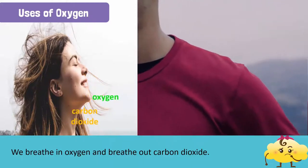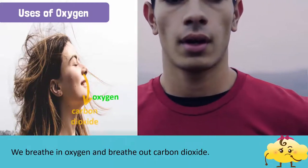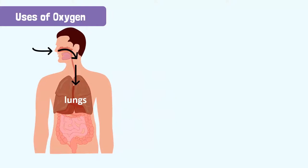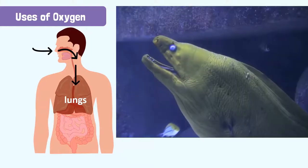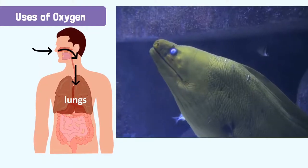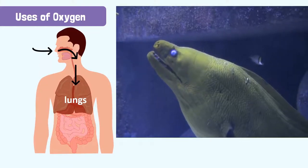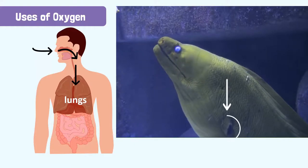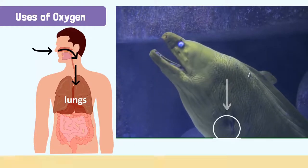We exhale carbon dioxide and all the other gases. We breathe with our nose, and from there the air goes to our lungs. Fish breathe in water and filter oxygen that is dissolved in the water. They breathe with special organs on their bodies called gills.